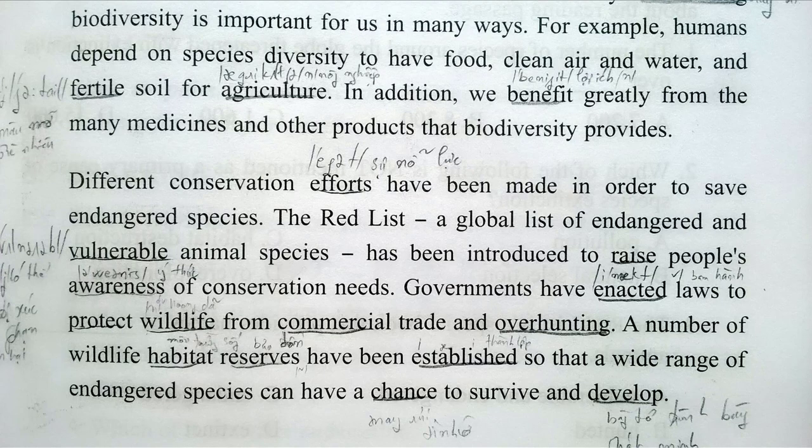Different conservation efforts have been made in order to save endangered species. The Red List, a global list of endangered and vulnerable animal species, has been introduced to raise people's awareness of conservation needs. Governments have enacted laws to protect wildlife from commercial trade and over-hunting. A number of wildlife habitat reserves have been established so that a wide range of endangered species can have a chance to survive and develop.